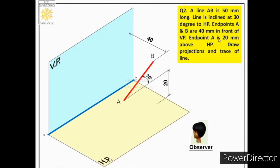The next condition states that endpoint A is 20 mm above HP, so the distance of endpoint A from HP is given as 20 mm. In this case, the line is inclined to HP and parallel to VP. Now we know that if a line is parallel to any reference plane, its projection on that plane will be a line of true length.